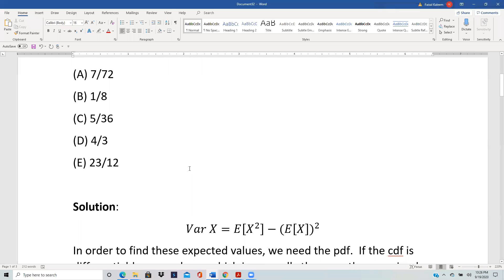We know that variance of X is E[X²] minus (E[X])² and to get these expected values we need the PDF.